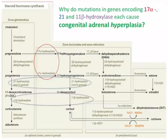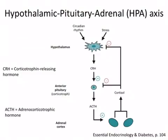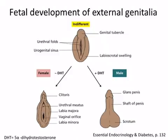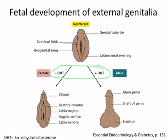Why do mutations in genes encoding the 17-alpha, the 21, and the 11-beta-hydroxylase each cause congenital adrenal hyperplasia? Each of these mutations causes a decrease in the production of cortisol. This decreased cortisol means there is less feedback inhibition on the hypothalamus and the anterior pituitary, resulting in an increase in the amount of ACTH secreted, which stimulates growth of the adrenal cortex — its hyperplasia. Some forms of congenital adrenal hyperplasia can result in virilization of genetically female infants or the production of atypical or ambiguous genitalia, because of increased production of dihydrotestosterone (DHT) in females.